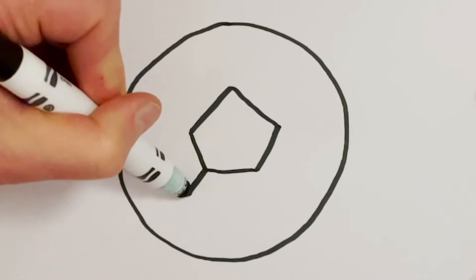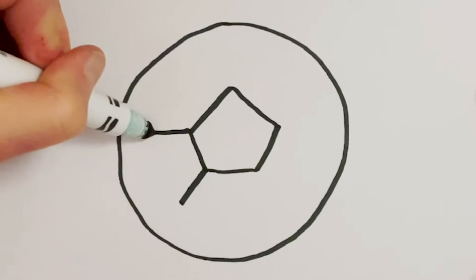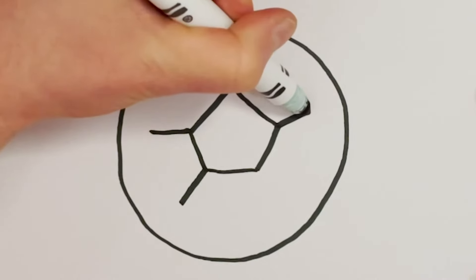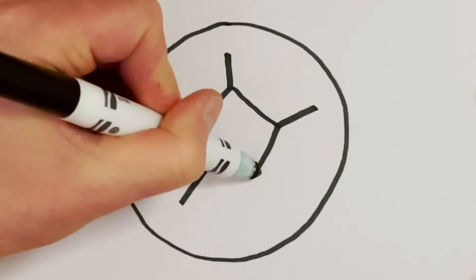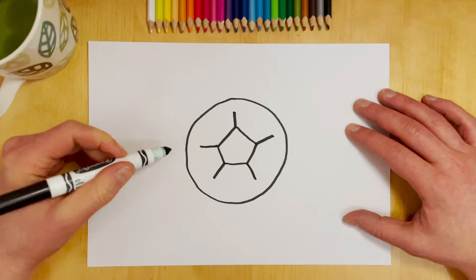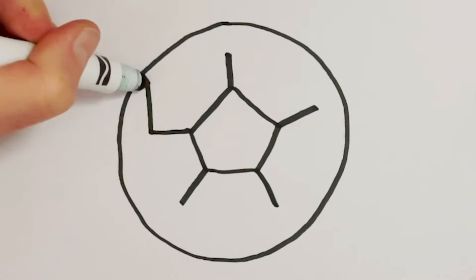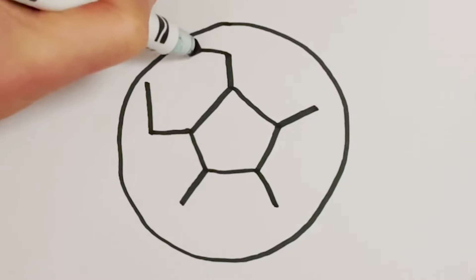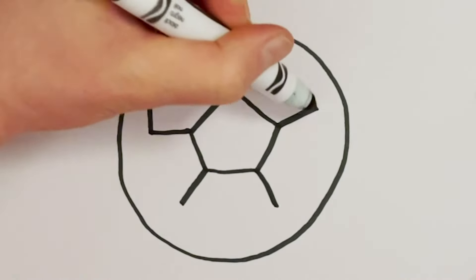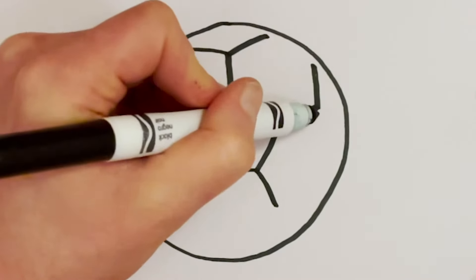Now from here we're going to draw some lines out towards the edge from each one of the corners. Let's stop about halfway out to the edge. Now from each one of these lines we're going to split the line into two other lines, so here you'll see sort of a Y shape where we draw the line close to the edge but not quite touching the edge of that circle.